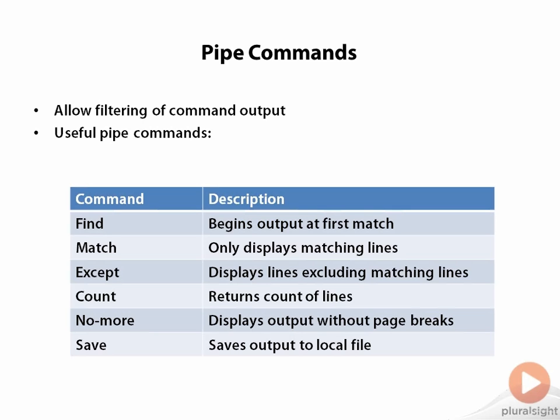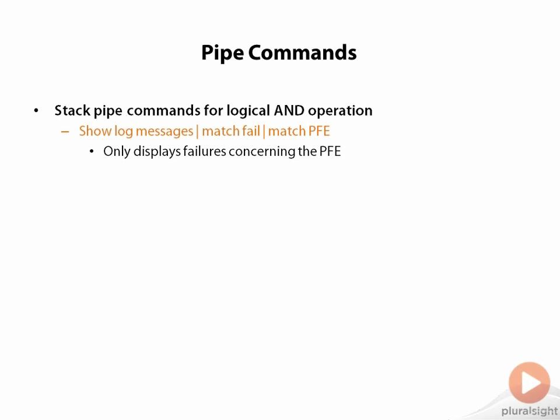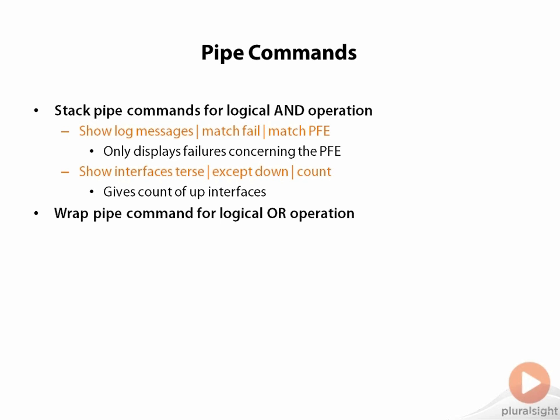Junos also has some options for combining pipe commands that are quite powerful. If you stack two pipe commands next to each other, you get a logical AND operation. For example, 'show log messages pipe match fail pipe match PFE' will display all log messages that reference both fail and PFE. And 'show interfaces terse except down pipe count' would give you a count of all the up interfaces.